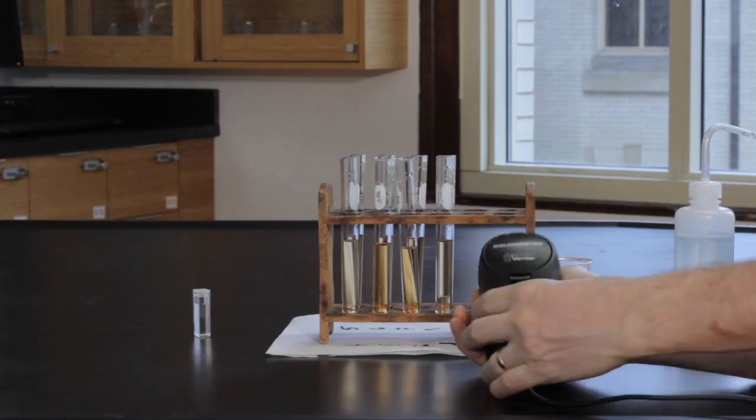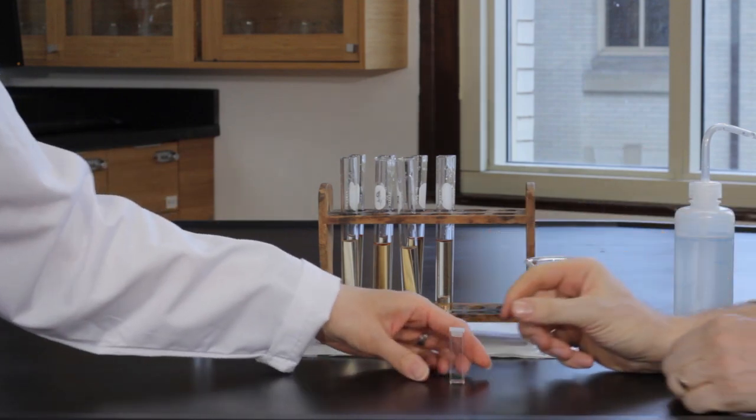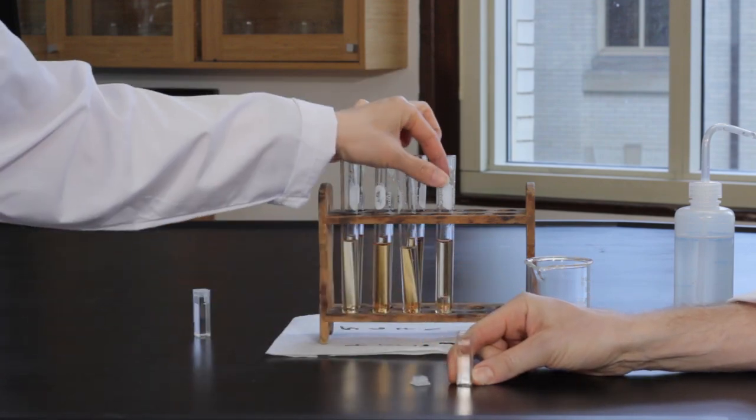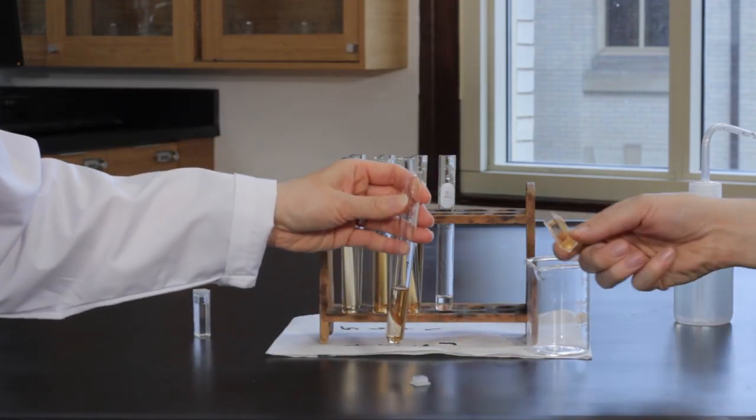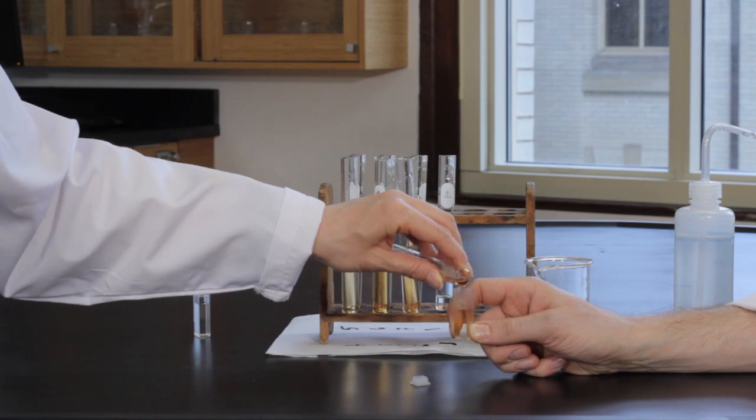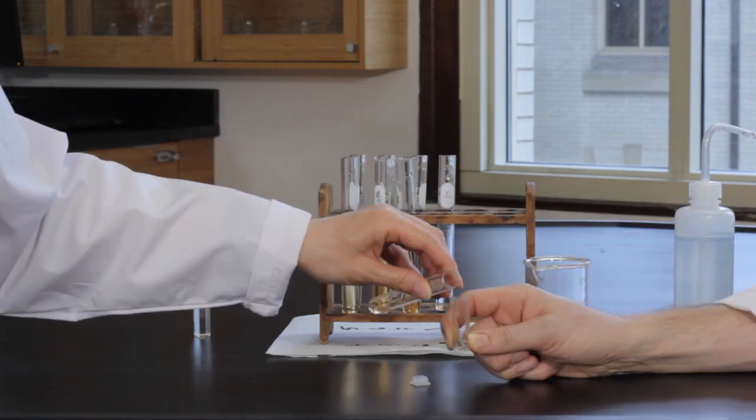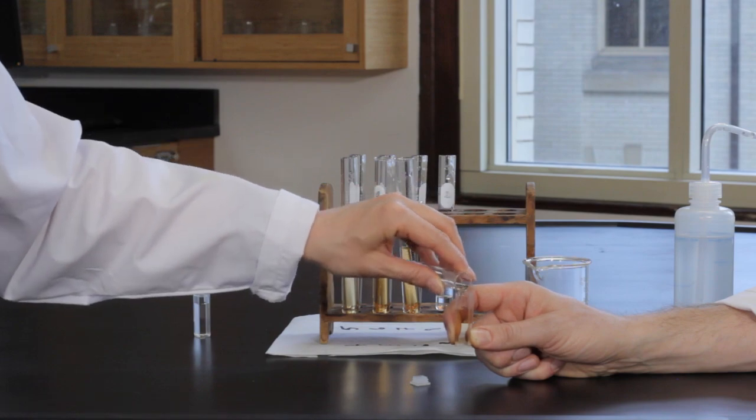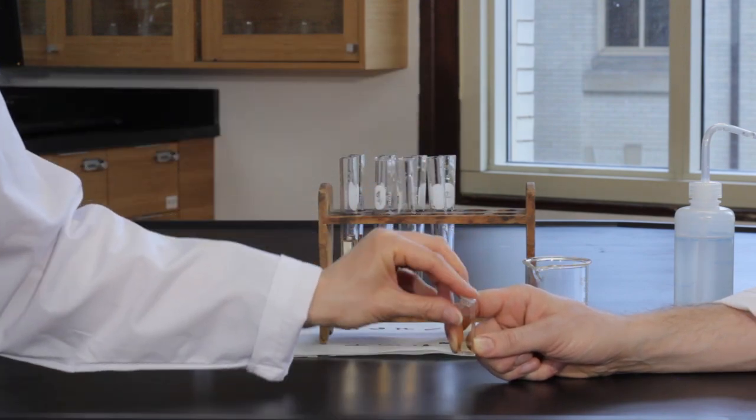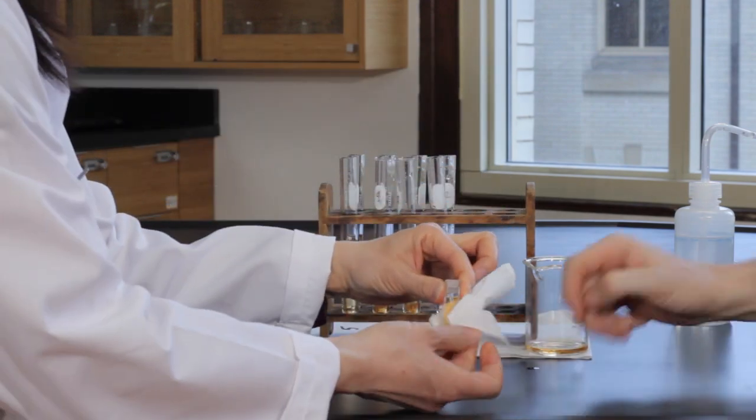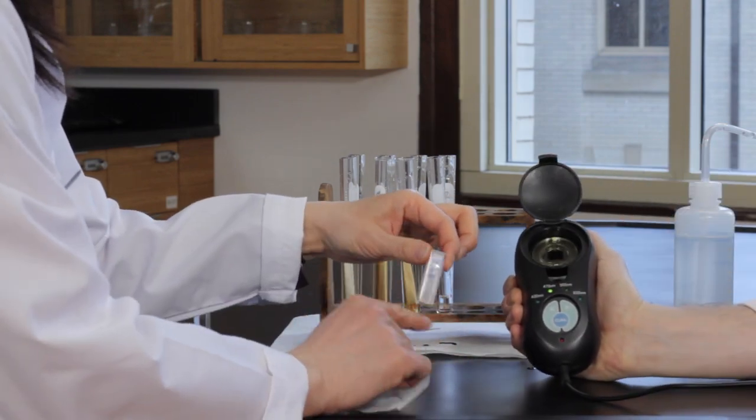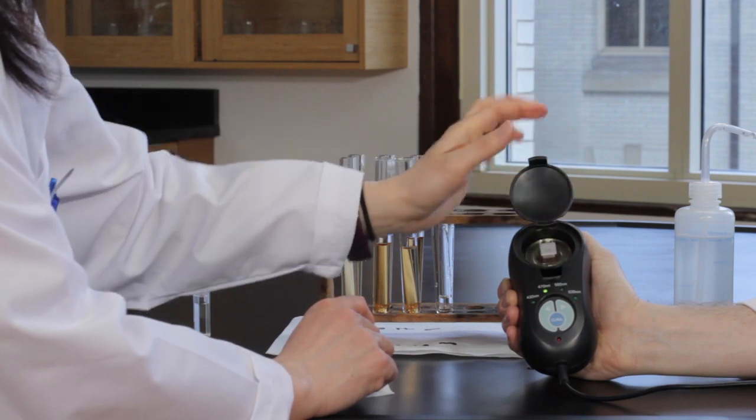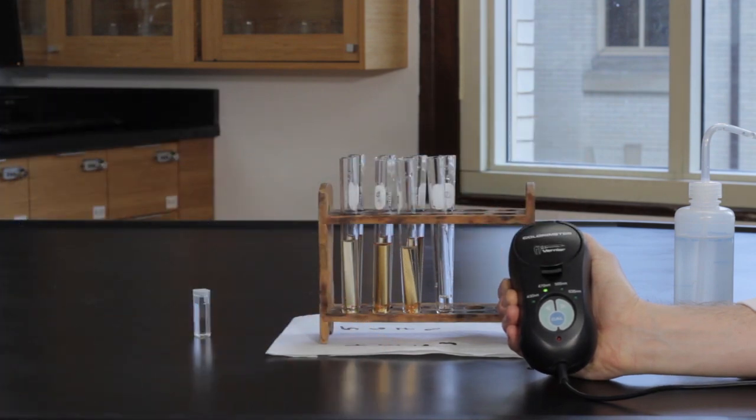Remove the reference solution from the cell wall and replace it with the cuvette containing solution one. Rinse the other cuvette with solution one two times. Discard the rinse eights. Fill the rinsed cuvette with the solution and then cap it. Be sure to wipe the cuvette with a Kim wipe. Follow the instructions in your lab manual to collect the absorbance measurement in Logger Pro for solution one.